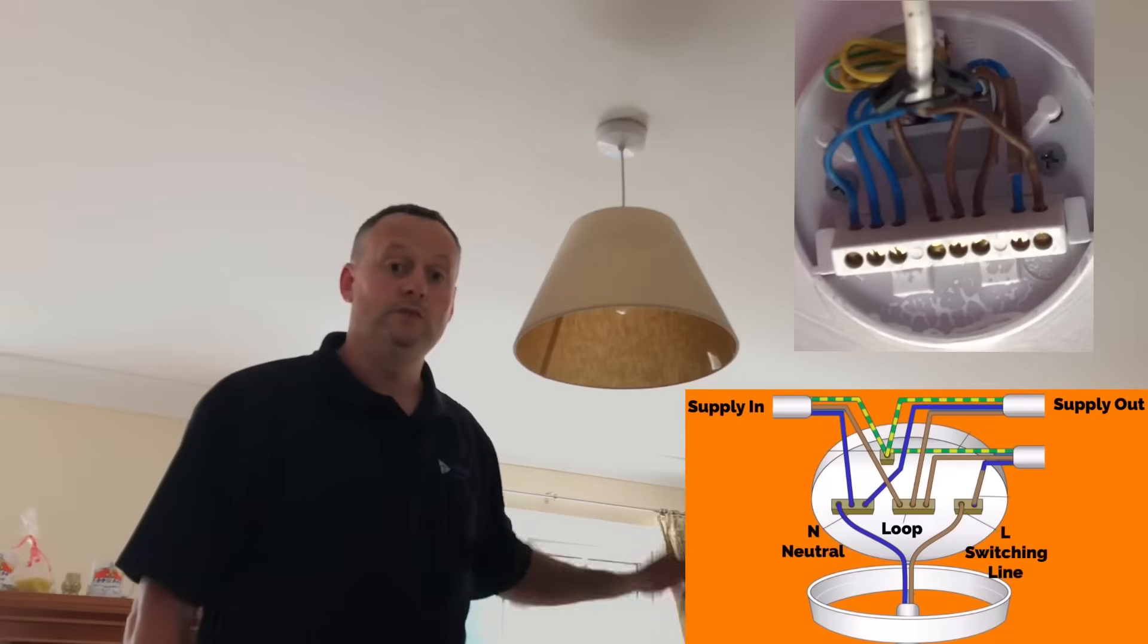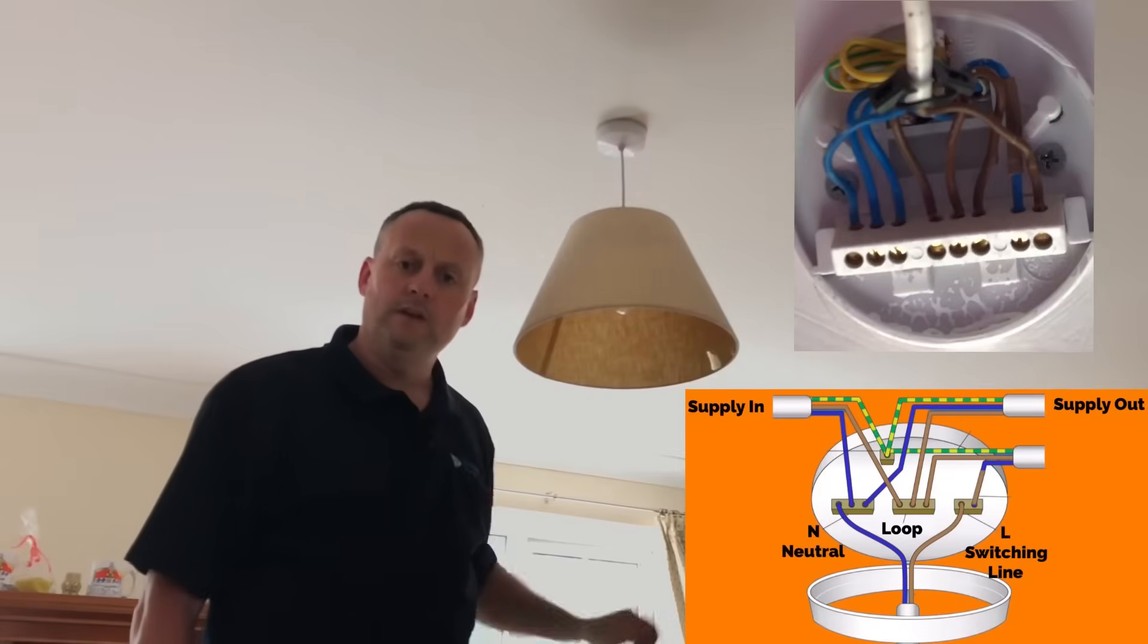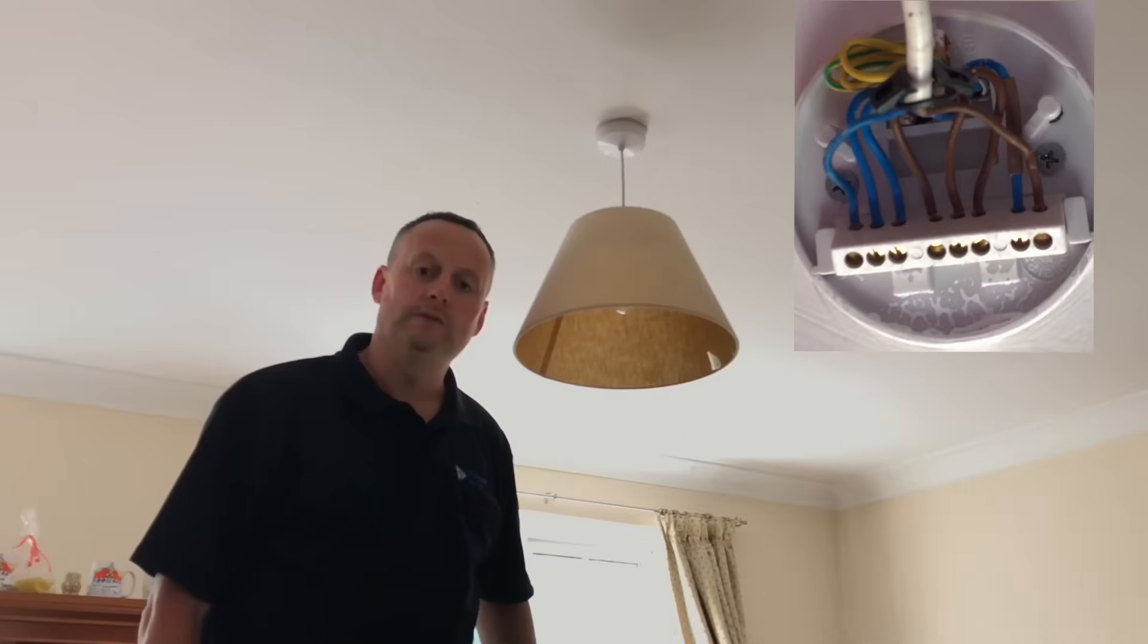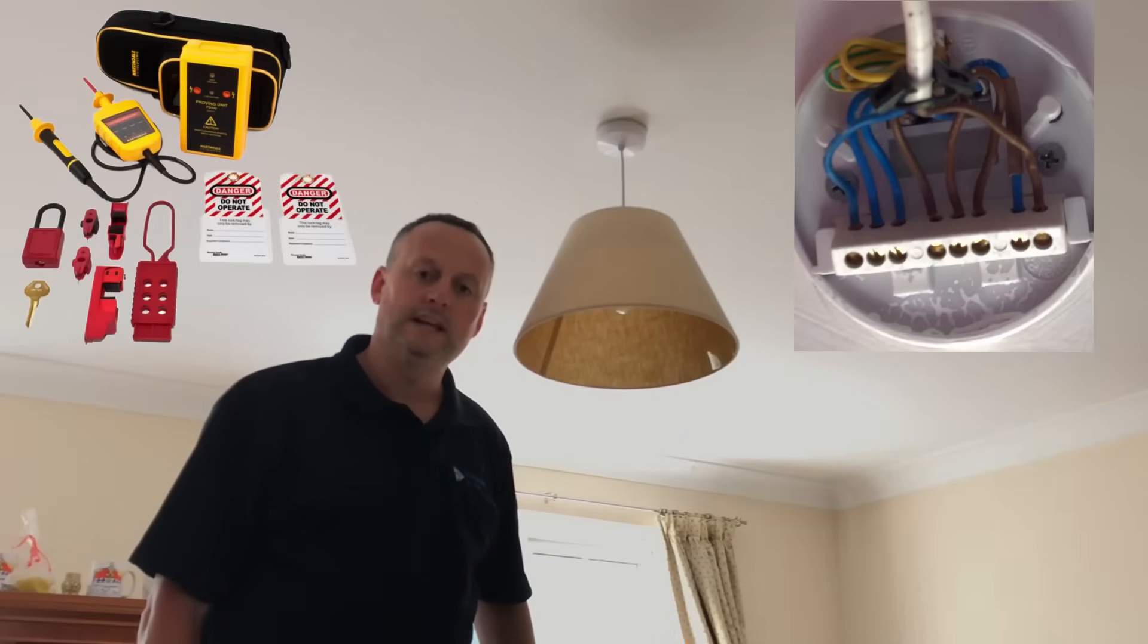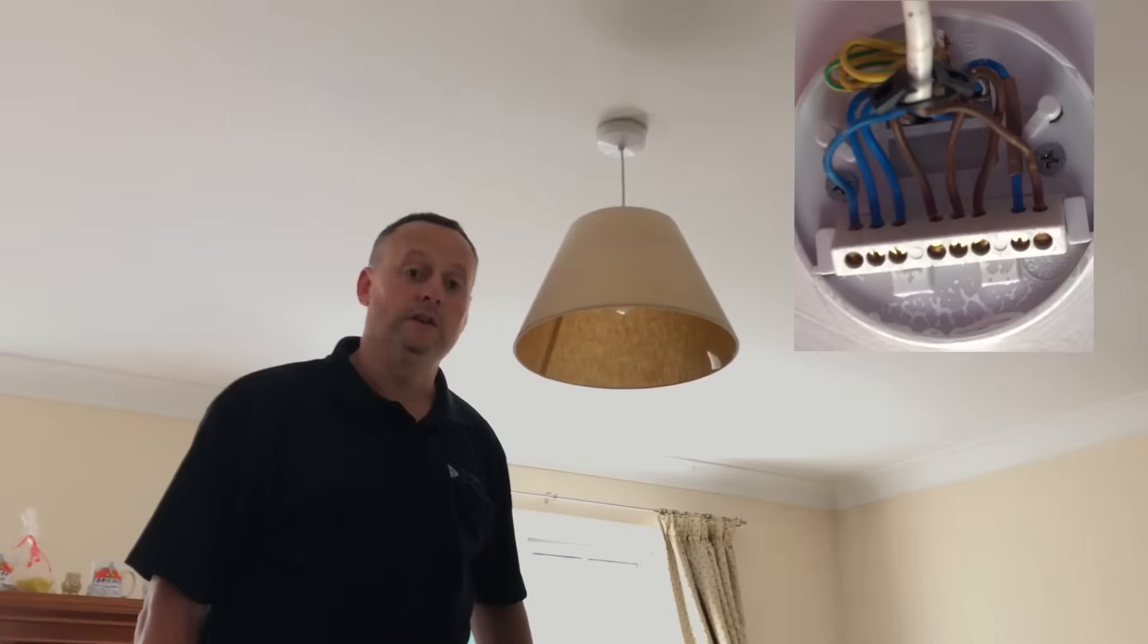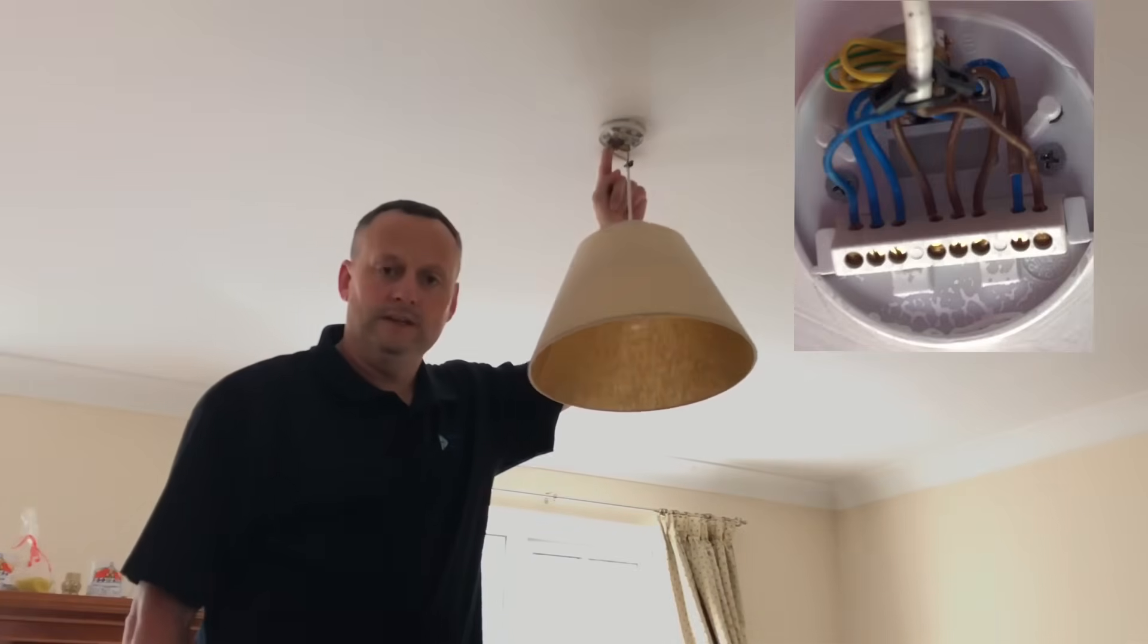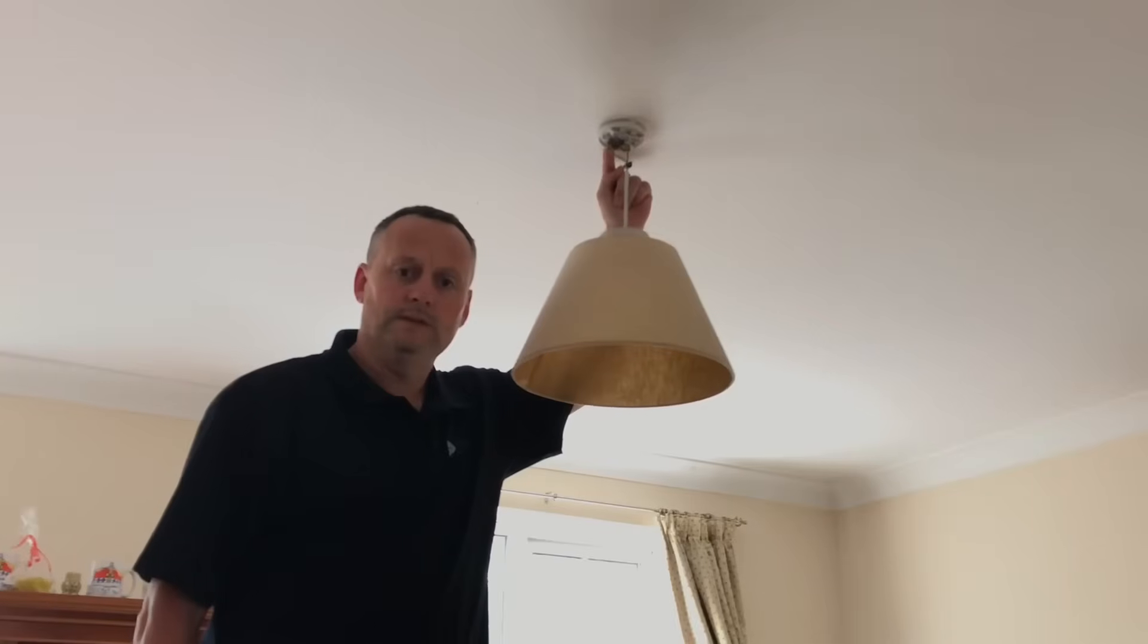In this video we're going to look at the connections within a ceiling rose in a lighting circuit in a domestic dwelling. This will link to other videos that I've done on lighting circuits. The circuit has been safely isolated, locked off and proved dead, of which I've done a separate video on that in the past. We're just going to look at the connections and how they're terminated within the ceiling rose in this video presentation. So let's take off the ceiling rose cover.